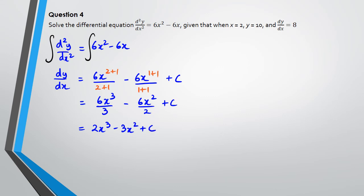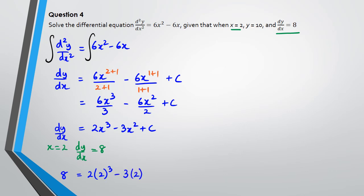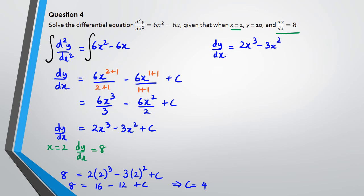We're told that when x = 2, dy/dx = 8. Substituting: 8 = 2×(2³) − 3×(2²) + c = 16 − 12 + c = 4 + c... wait, that gives 8 = 4 + c, so c = 4. Therefore dy/dx = 2x³ − 3x² + 4.